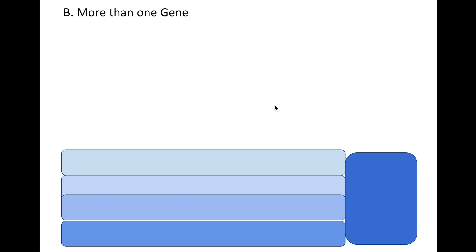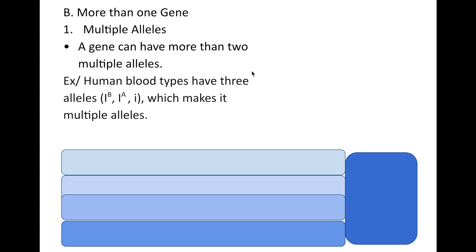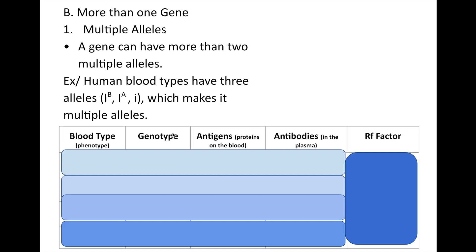We're going into more than one allele. Multiple alleles is when a gene can have more than two alleles. Typically we have two alleles of dominant and recessive. Let's use human blood type, which has three alleles: a dominant I with B antigen, a dominant I with A antigen, and a recessive i which means they don't have any antigen. Having two or more alleles causes multiple alleles.